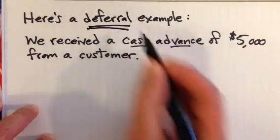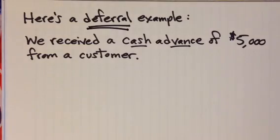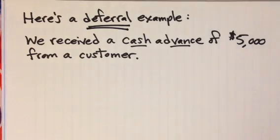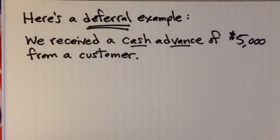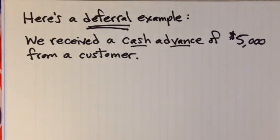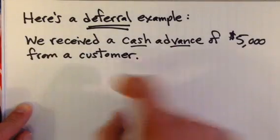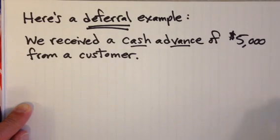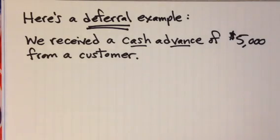Now let's do an example of a deferral. We just did an example of an accrual — this is now a deferral. In this case, our company is receiving a cash advance of $5,000 from a customer. It's the opposite of the example we just did. In the accrual example, we did the work before receiving the money — the money comes later. In this deferral example, we are getting the money before we do the work. We're receiving the money today as the cash advance, and we're going to have to do the work for the customer later.